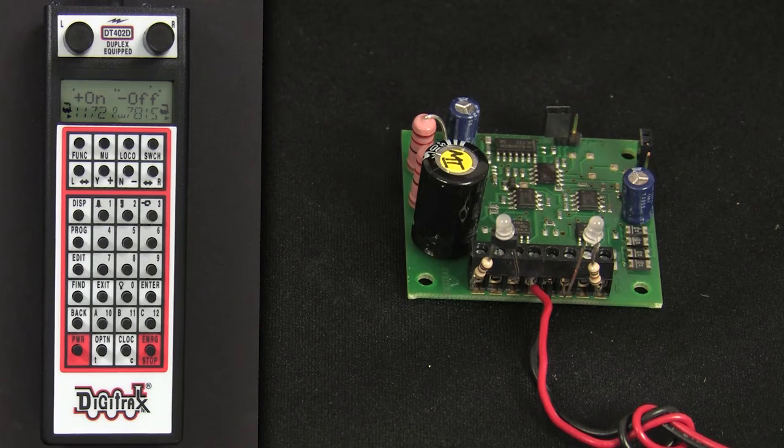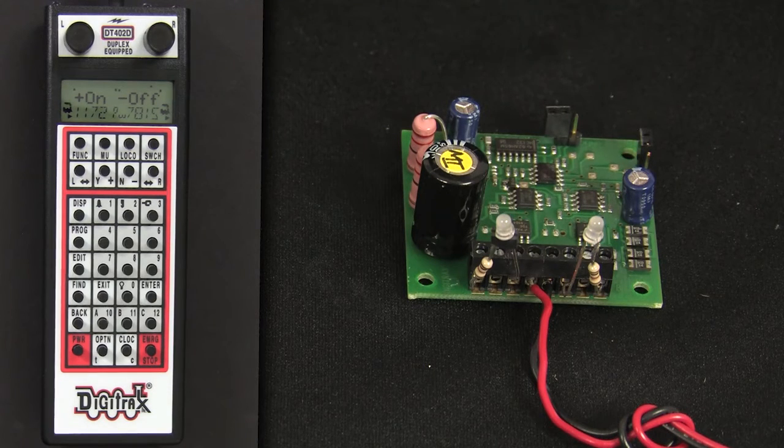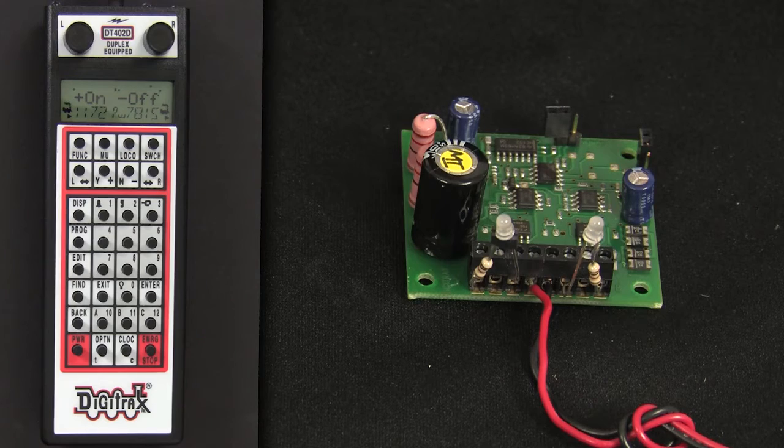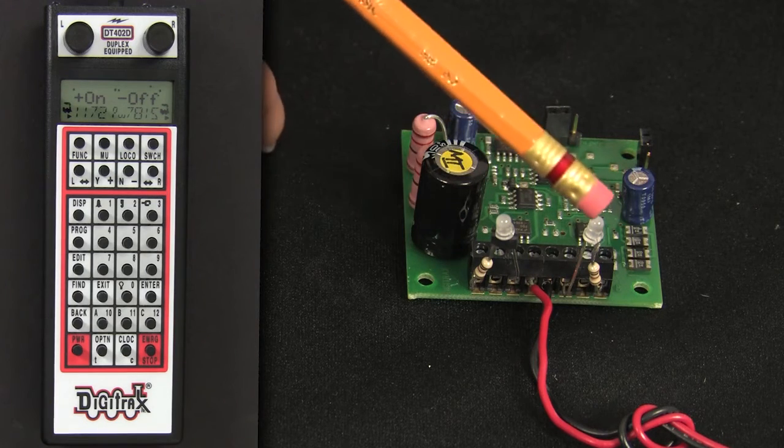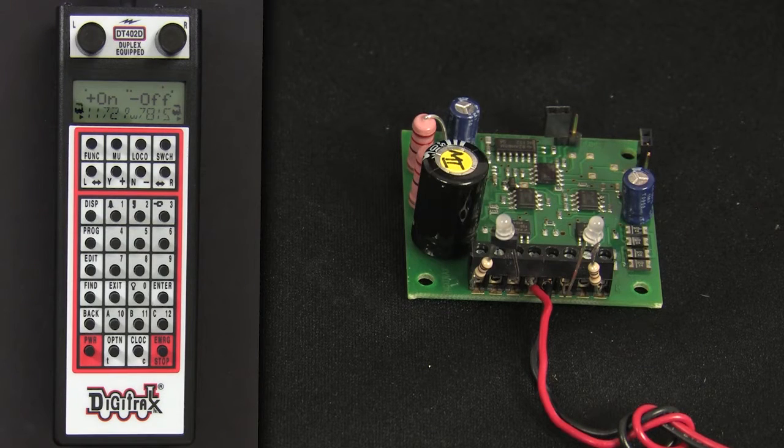In order to program, you must first move the program jumper, which is located here. For the sake of instruction, we're using bipolar LEDs to indicate the switch machines and to show how they react to the DS-52.